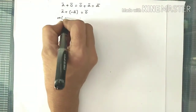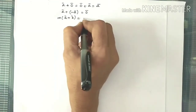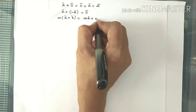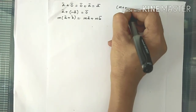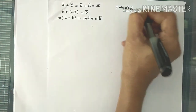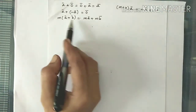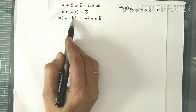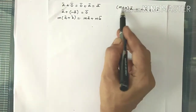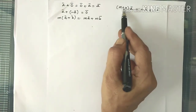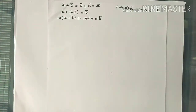Next is scalar multiplication distributivity. M into (A bar plus B bar) equals MA bar plus MB bar. Similarly, (M plus N) into A bar equals MA bar plus NA bar. The difference is: in the first case we have addition of vectors multiplied by a scalar, and in the second case both M and N are scalars with only one vector.